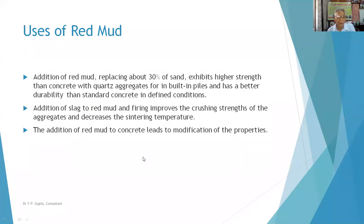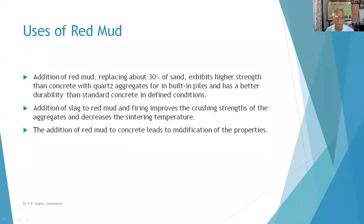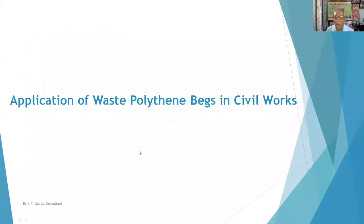Addition of red mud replacing about 30 percent of sand gives higher strength than normal concrete, is useful for piles, and has better durability under defined conditions. Addition of slag to red mud and firing improves crushing strength of the aggregate and decreases the sintering temperature. Addition of red mud to concrete leads to modification of its properties as well.